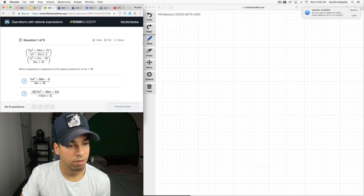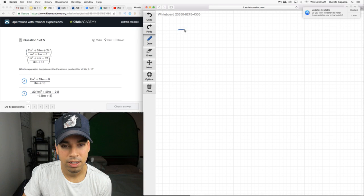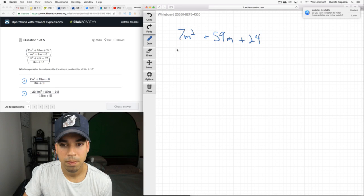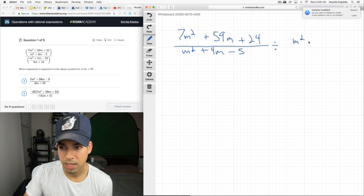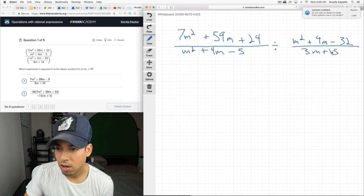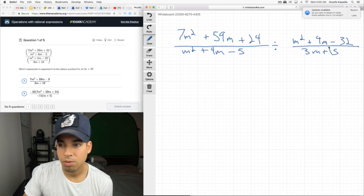Look, this is a giant fraction. Don't let it intimidate you. It looks insane. But remember, this is really a division problem. At the end of the day, it's 7m squared plus 59m plus 24 over m squared plus 4m minus 5. Fractions are just division problems after all. We have 59m plus 24 over m squared plus 4m minus 5 divided by, it's just divided by that denominator.